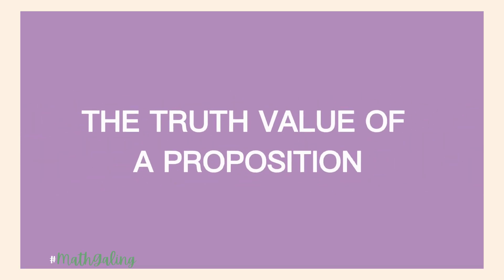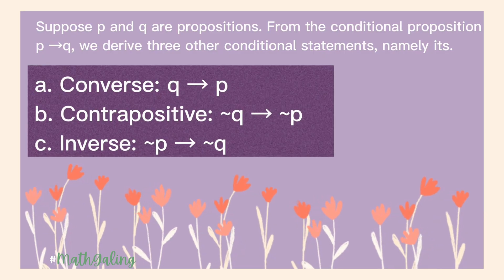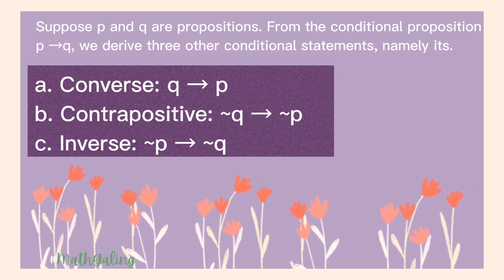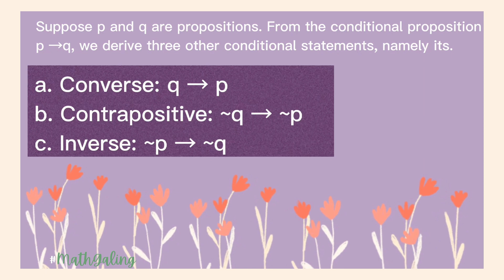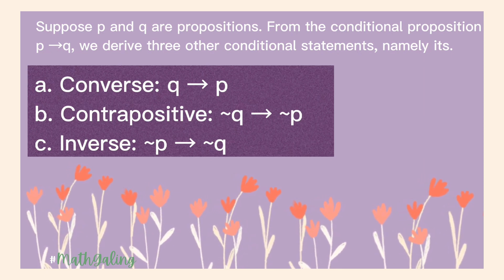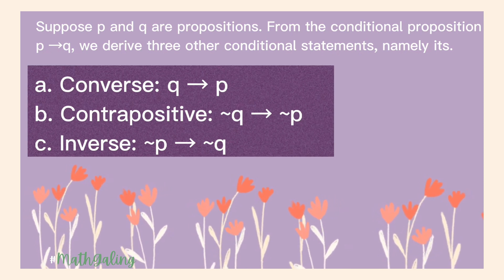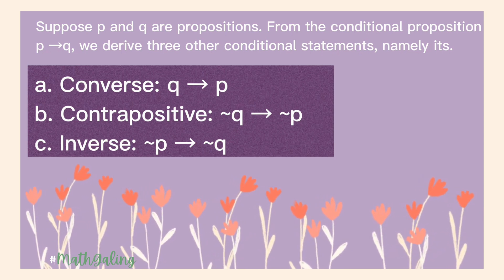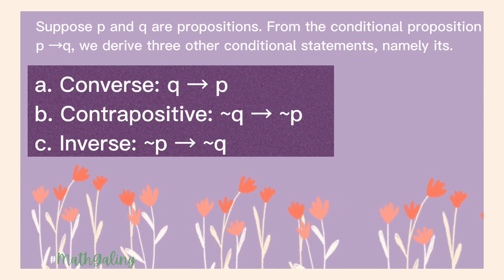And that's how you find the truth value of a proposition. Conditional Propositions: Suppose P and Q are propositions. From the conditional proposition 'P then Q,' we derive three other conditional statements, namely: Converse — Q then P; Contrapositive — if not Q, then not P; and Inverse — if not P, then not Q.